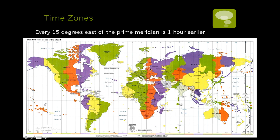You'll notice on this map the colors green, red, purple repeating — those are time zones. Countries can choose to participate in the time zones or not; it gets a little confusing when politics get involved. For example, China is way wider than 15 degrees, but they've elected to only have one time zone for their entire country. They should probably have close to four.